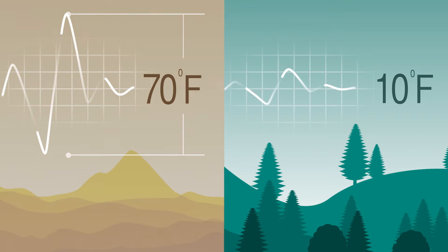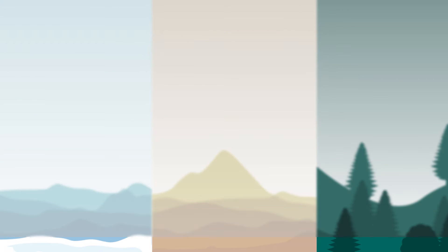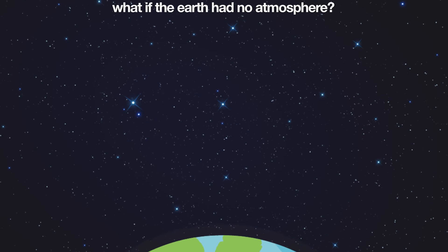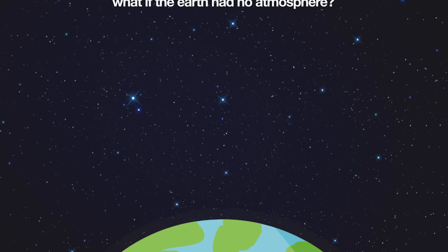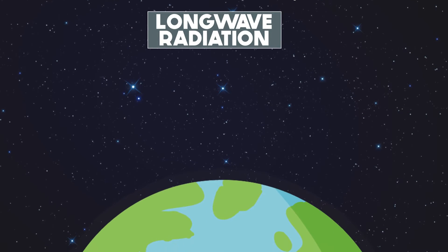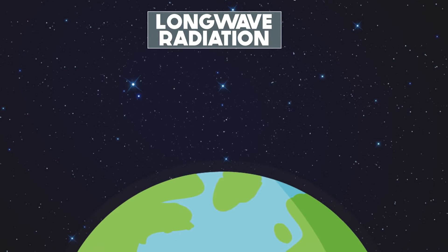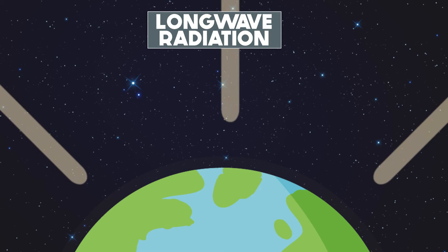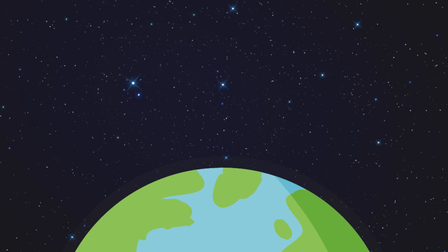Over the whole globe, the amount of incoming solar energy that is reflected is about 30%. Energy from the Earth is emitted as longwave radiation, as the Earth is much cooler than the Sun. With no atmosphere, all of the longwave radiation emitted by the Earth would pass directly back out to space.